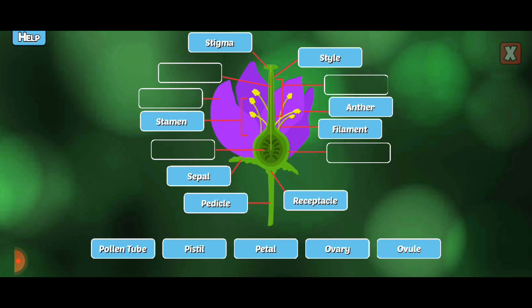Label the missing parts of the flower. Ovary. The ovary produces seeds.